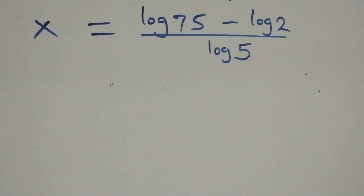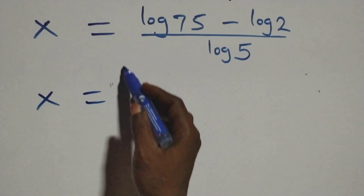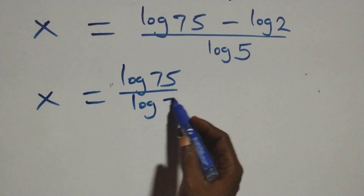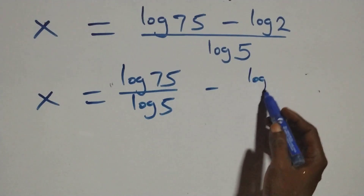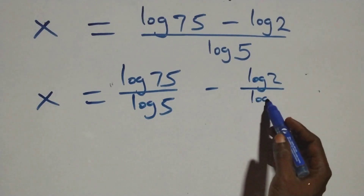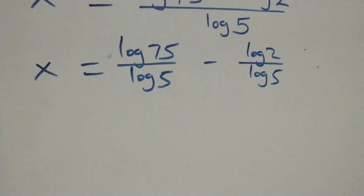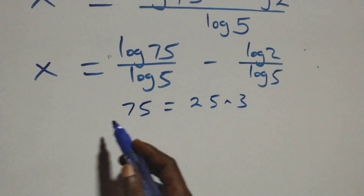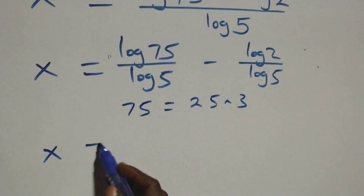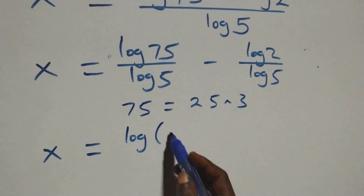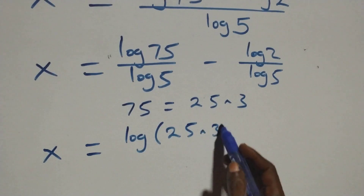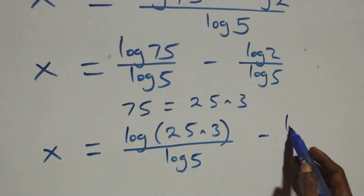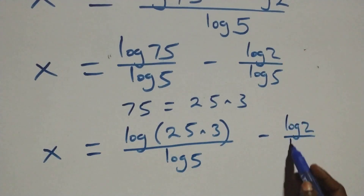Next we separate this into two fractions: x equals log 75 over log 5, minus log 2 over log 5. Also, 75 can be written as 25 times 3, so we have x equals log(25 times 3) over log 5, minus log 2 over log 5.